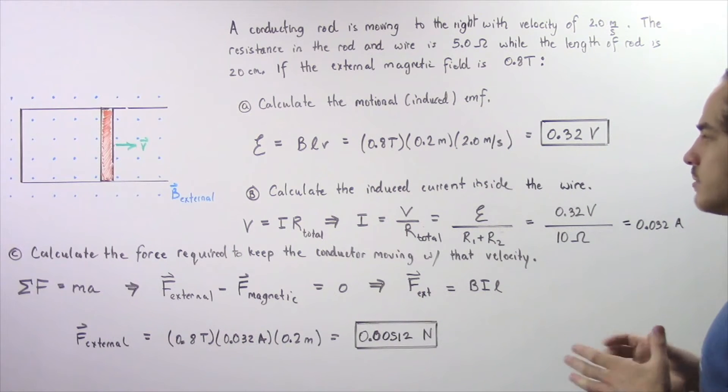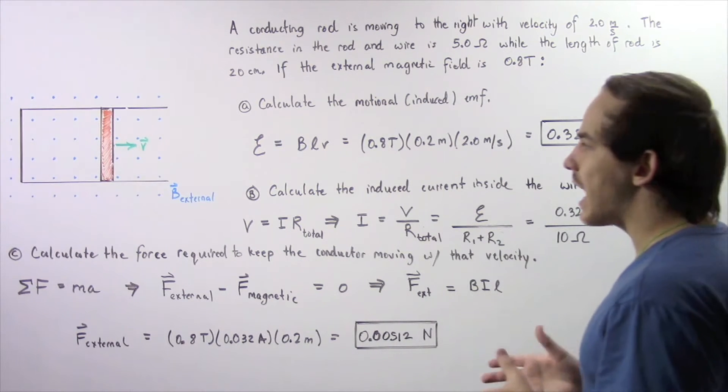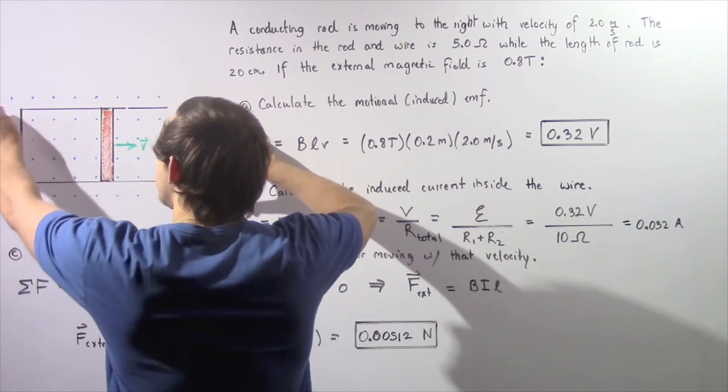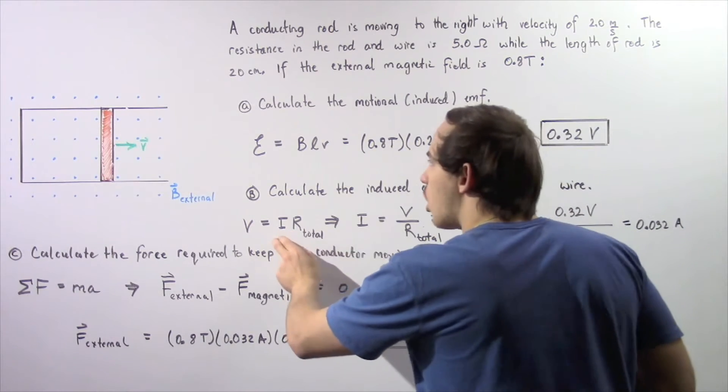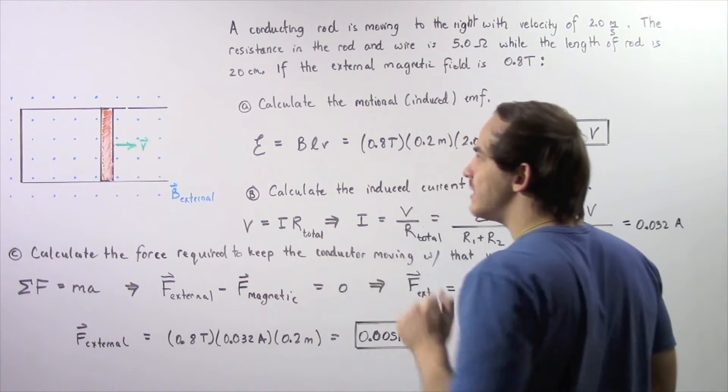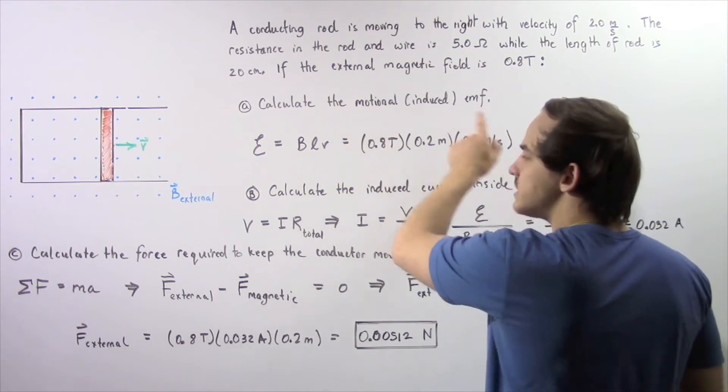Now let's move on to part B. In part B, we want to calculate the induced electric current inside our wire. We essentially use Ohm's law. The voltage, or in this case our induced EMF, is equal to the product of the electric current I and the total resistance.